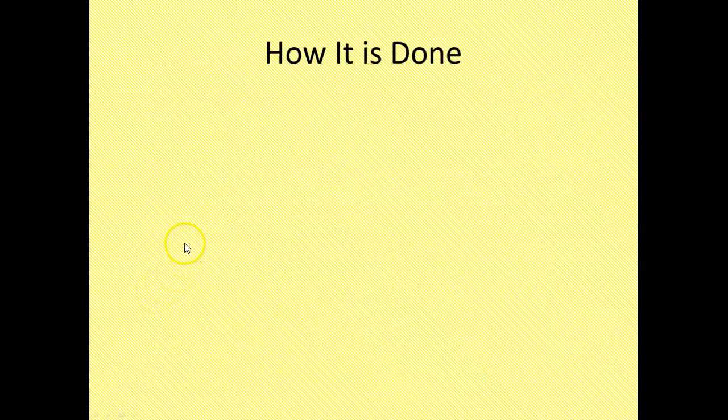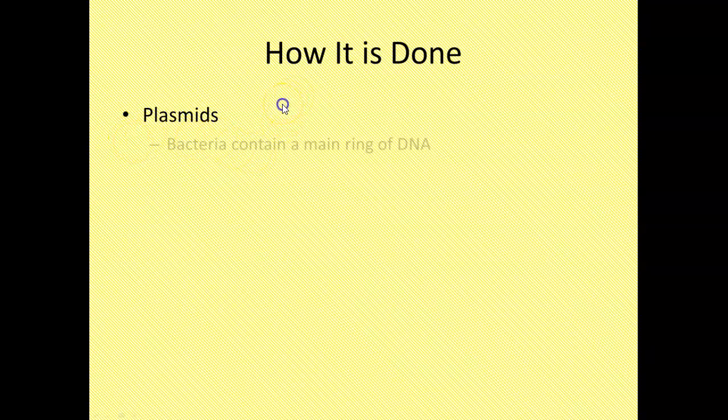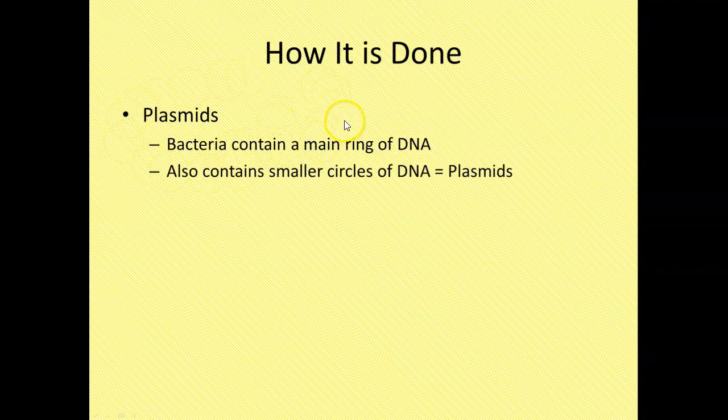So now let's talk about how it's going to be done. Let's talk about some of the important parts that we're going to be using. One of the first parts is a thing called plasmids. Now bacteria, they contain not a nucleus because they're prokaryotic, but they do contain a main ring of DNA. That contains all the genes for the bacteria. But what else is floating around in bacteria are smaller rings of DNA called plasmids.